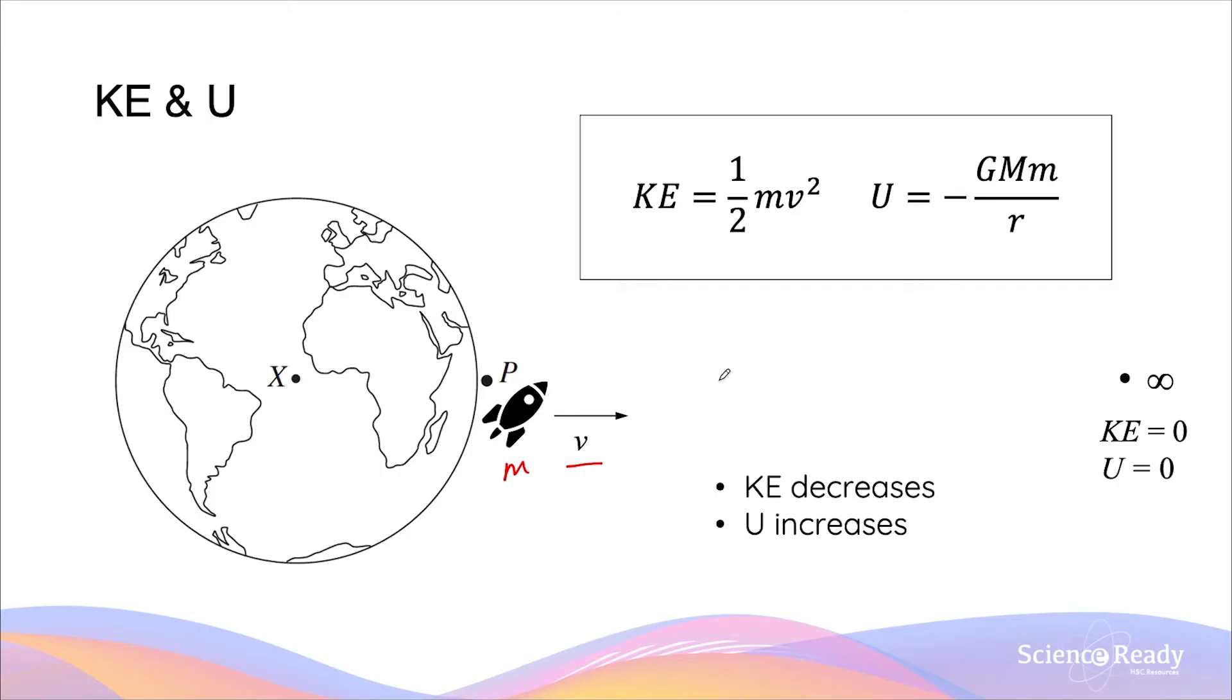As it approaches the infinity point, or as it goes further away from the earth, its kinetic energy will decrease, and this will be transformed into its increasing gravitational potential energy.